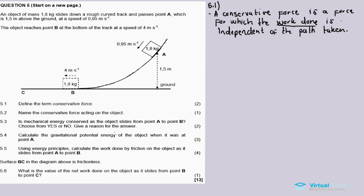The other forces - friction and applied force - all depend on the path taken during the motion. Now 5.2: name the conservative force acting on the object. There's only one conservative force acting, which is gravitational force.